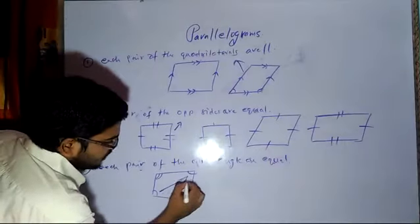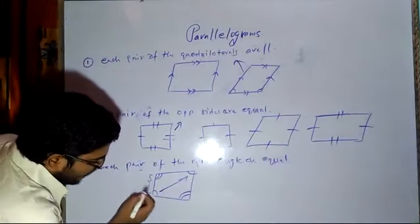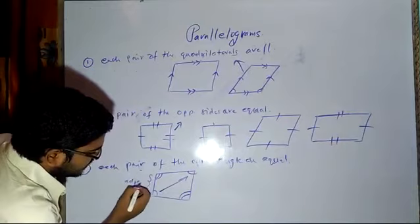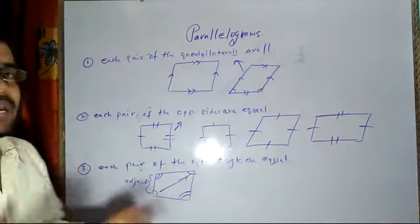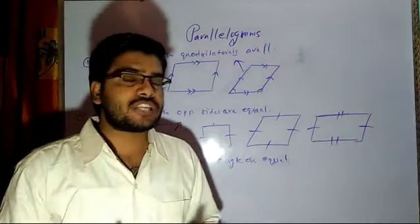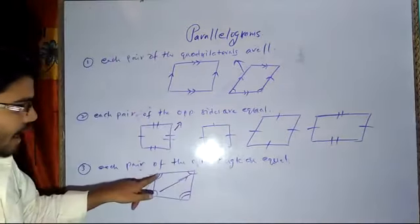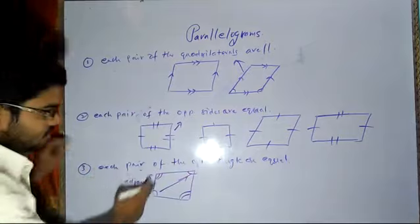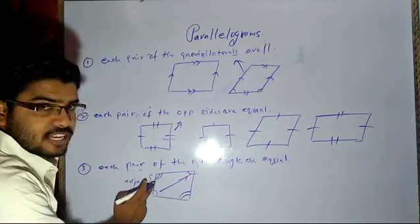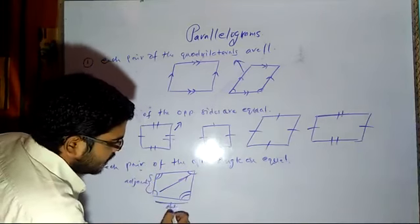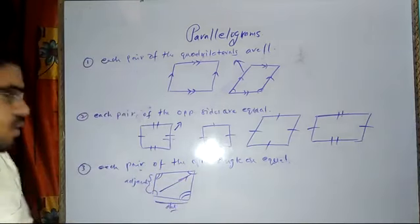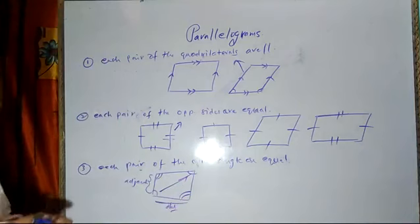These are called opposite angles. The angles placed on the diagonals are said to be opposite angles, while angles on the same side are called adjacent angles. So if opposite angles are equal, then we can say that the quadrilateral is a parallelogram.